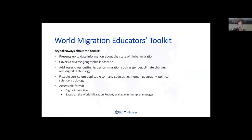To conclude, here are some key takeaways about the toolkit. It presents up-to-date information about the state of global migration, represents a diverse geographic landscape, and addresses cross-cutting issues such as gender, climate change, and digital technology. It offers a flexible curriculum applicable to many courses such as human geography, political science and sociology. We have prioritized accessibility in the delivery of the toolkit, embedded the world migration digital interactive platform into many classroom activities, and the toolkit is based on the World Migration Report, which is available in multiple languages, with a PDF version for teachers unable to access the digital interactive.